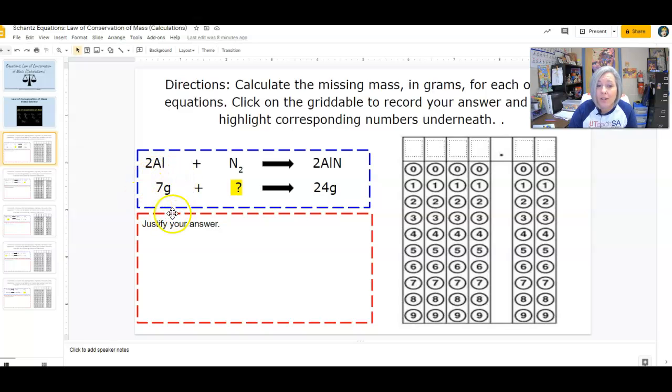If I already have 7 grams, and I'm trying to get to 24, think about what would be the value of the missing mass. It's very simple. Take 24 minus the 7.